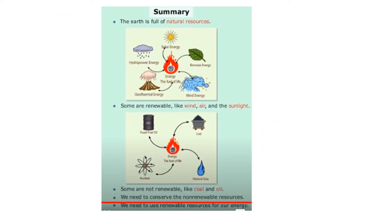Now, let's summarise what we have learnt in this lesson today. We have lots and lots of natural resources on this planet. Some are renewable, like wind, air, and sunlight. Some are not renewable, like coal and oil, and we need to conserve these. Can you think of any other natural resources which can go in either of these categories? That is your task today — to create a way of sorting natural resources into two categories: renewable and non-renewable. You can do this however you choose. Be creative! There are three examples of how you can do this on your home distance learning sheet today.